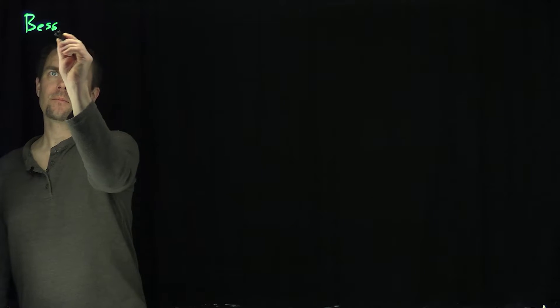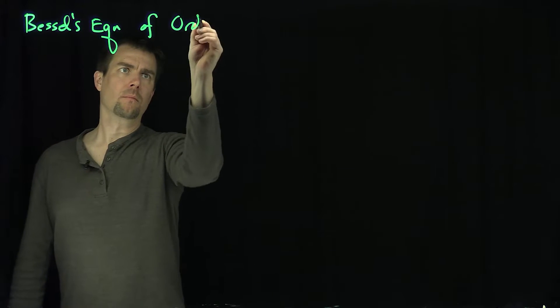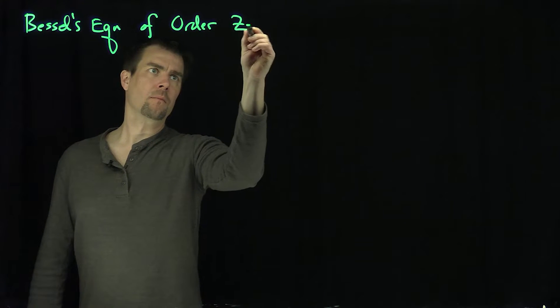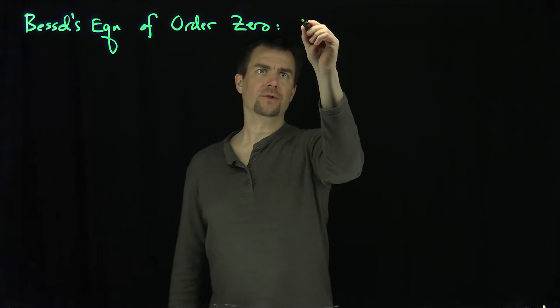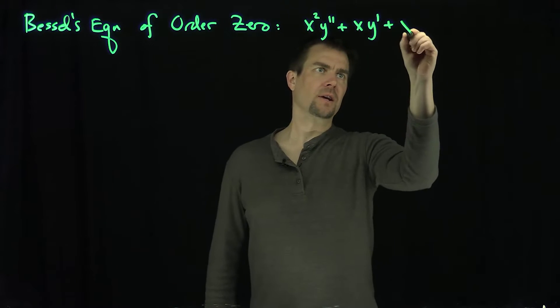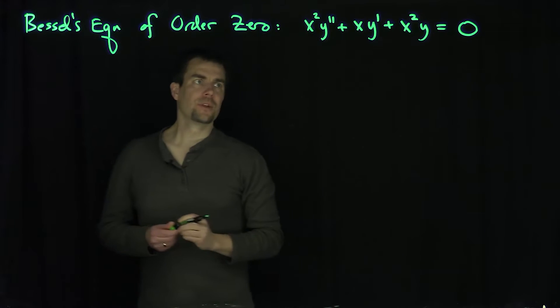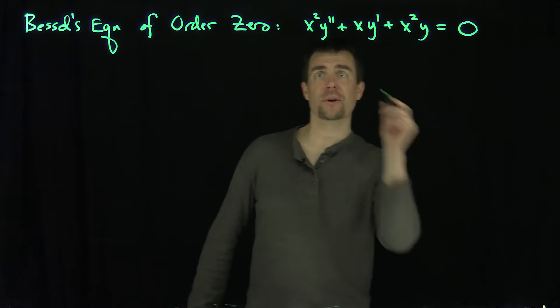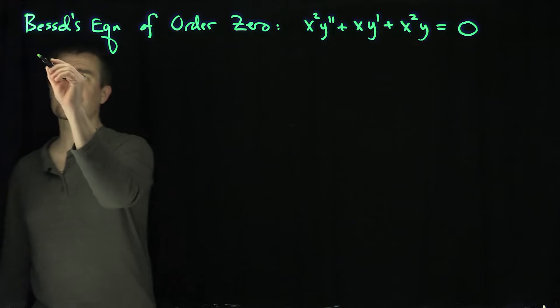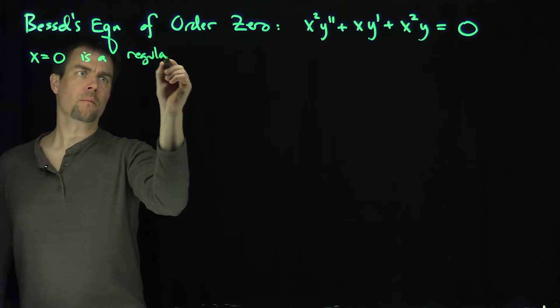Hello students. In this video we'll investigate the Bessel function of order 0. Bessel's equation of order 0 is a special one, and it looks like this: x squared y double prime plus x y prime plus x squared y is equal to 0. In this equation, the point x equals 0 is a regular singular point.